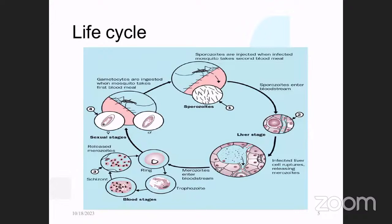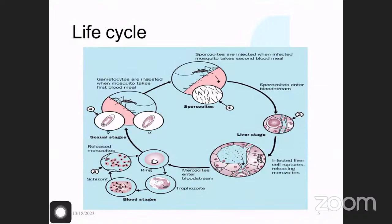The life cycle of malaria is very interesting to know because many drugs target different stages. The life cycle begins when a female Anopheles mosquito bites a human and injects sporozoites present in its saliva into the bloodstream. These sporozoites quickly reach the liver and start multiplying, where they transform into a form called merozoites.